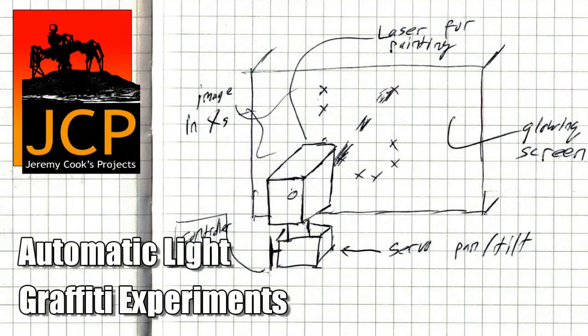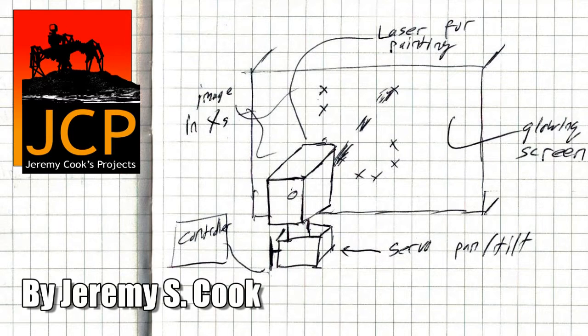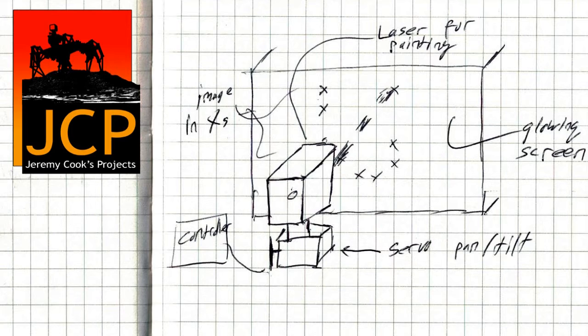Hi, my name is Jeremy Cook. Today I'll be talking about several light graffiti techniques that I've used over several years. Light graffiti is an art form where you pass a light in front of a camera's open shutter. With this you can create any sort of shape you want in light.